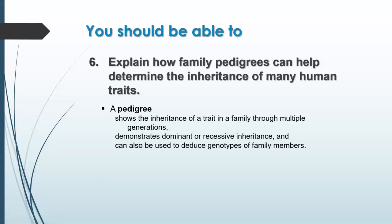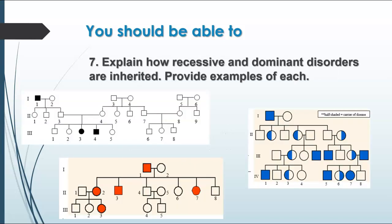Pedigrees show the inheritance of a trait through multiple generations in a family. It's a good way to figure out whether a trait is dominant or recessive. You can use it to figure out the genotypes of at least some of the family members, depending on what trait you're looking at. For instance, in this family pedigree, you notice that not very many individuals have this trait, but here you have two parents that do not have the trait who have children who do — which means this must be a recessive trait, because both parents are exhibiting the dominant phenotype while their children can express the recessive one.